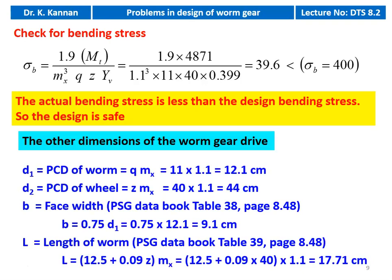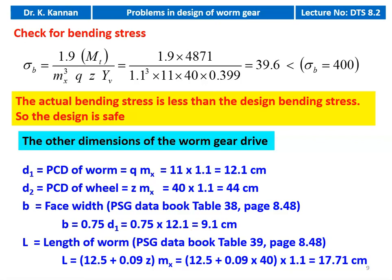Now we calculate the other dimensions of the worm gear drive. D1 (PCD of the worm) = Q × mx = 11 × 1.1 = 12.1 cm. D2 (PCD of the wheel) = z × mx = 40 × 1.1 = 44 cm. Face width from table 38, page 8.48: b = 0.75 × D1 = 0.75 × 12.1 = 9.1 cm. Length of the worm from table 39, page 8.48: L = 12.5 + 0.09 × z × mx = 12.5 + 0.09 × 40 × 1.1 = 17.71 centimeter.